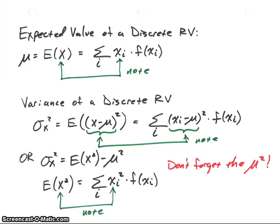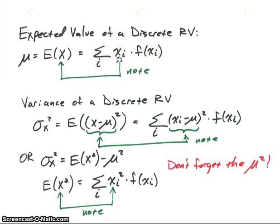Now, how do we calculate these values? We've already done the mean before. The mean is just the values of our experiment times their probabilities. For discrete random variables, these are just probabilities. So we're summing up the x values — the values that our discrete random variable can take — times their distribution function values.